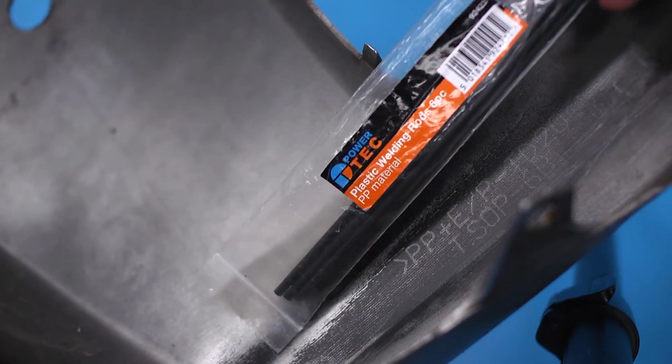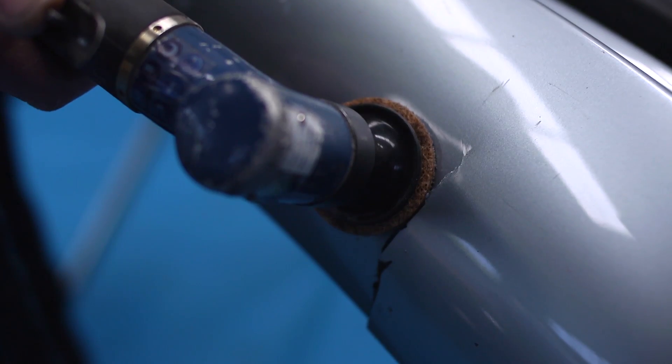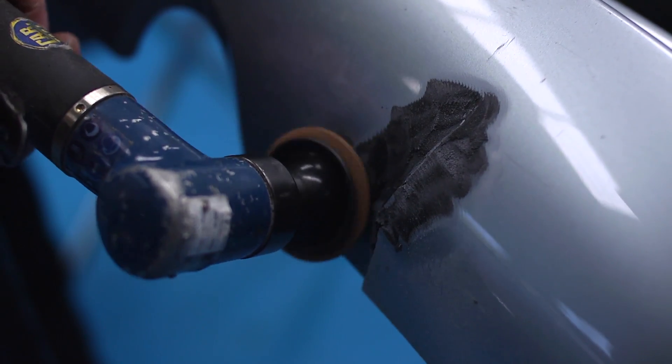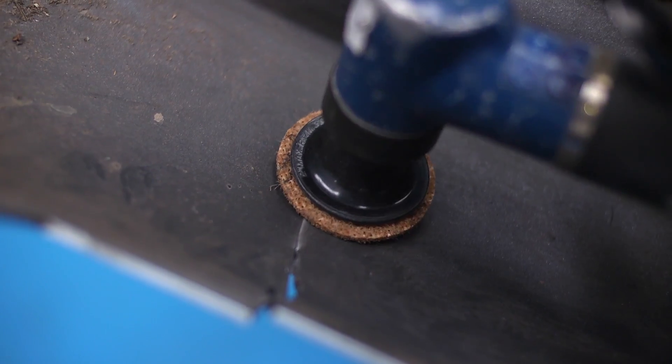Therefore PP plastic welding rods or strips will be used. We are going to repair this split on a rear bumper panel. First remove the paint and key off the plastic.